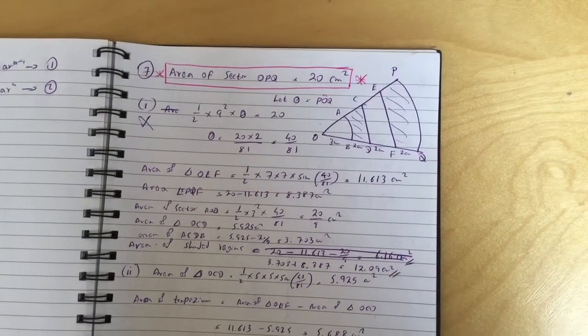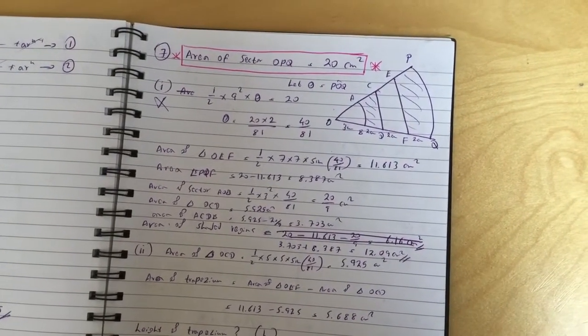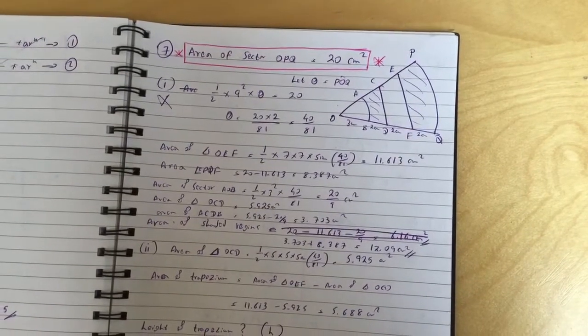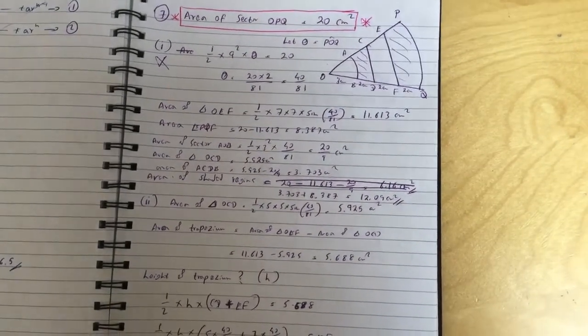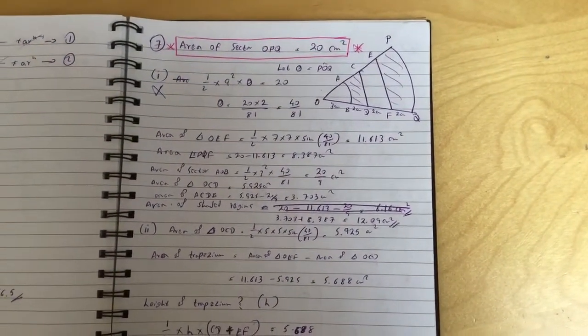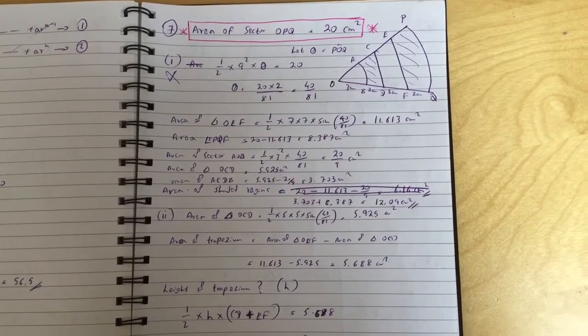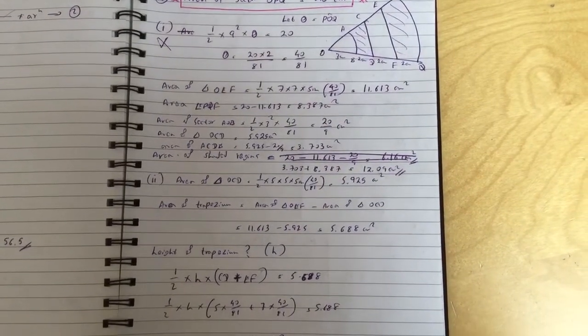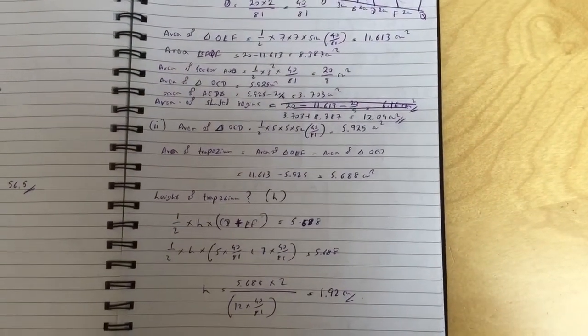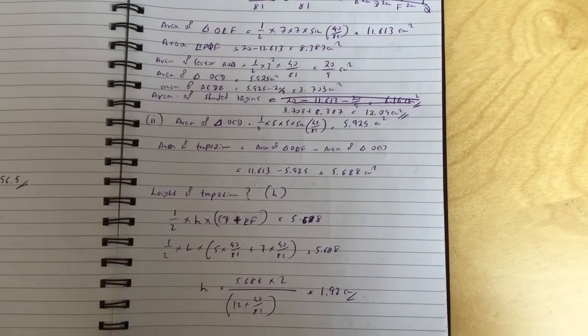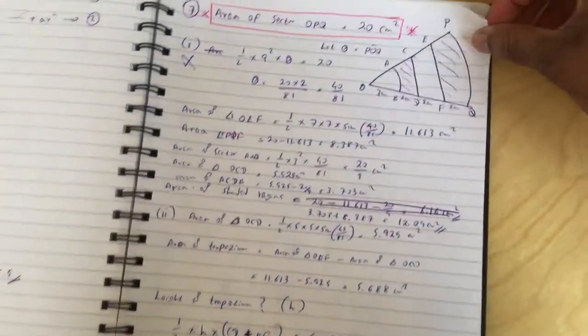And then I found the area of sector AOB, I found the area of triangle OCD, I found the difference there, which is 3.703. So the area of the shaded regions is 3.703 plus 8.387, which is 12.09 centimeters squared. And to get the other one, I found the area of the trapezium by subtracting area of triangle OEF and triangle OCD. So I found the area of the trapezium, and then trapezium is half times height times CD plus EF. And I found EF and CD using just r*theta, and then you get the height to be 1.92 centimeters.